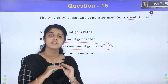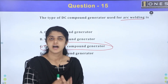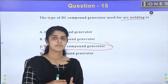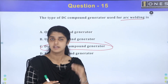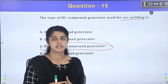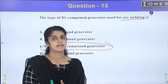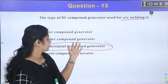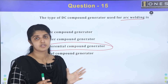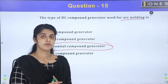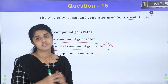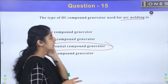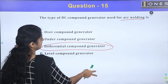For DC motor applications: the shunt motor is used for constant speed applications. The series motor is used for high starting torque applications such as cranes, lifts, and hoists. The compound motor is used for heavy sudden load applications.